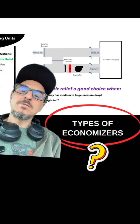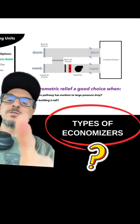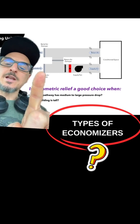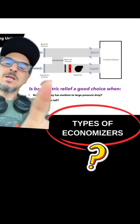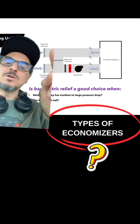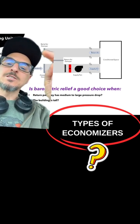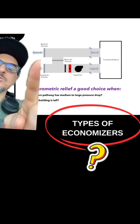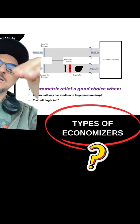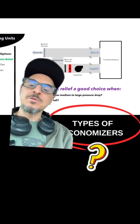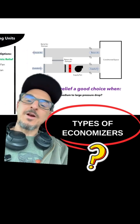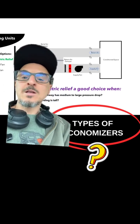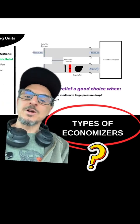The first and cheapest way is called barometric relief. The outside air gets pumped into the building, blowing it up like a balloon and pressurizing it. There's a weighted damper on the exhaust, and at a certain pressure, that damper will open and relieve the building pressure. This is very economical and works okay if you have very short duct runs and low return static pressure.